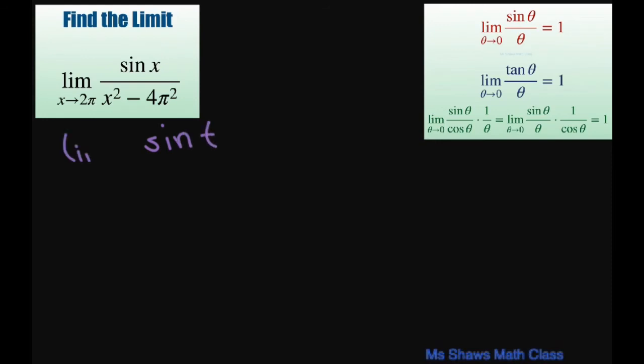So what we have left is sin(t) as we take the limit of t approaching 0, and we had 4πt plus t².